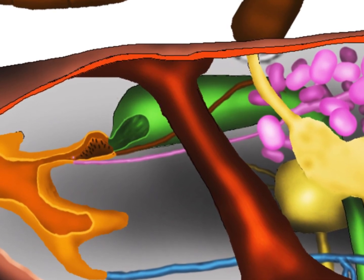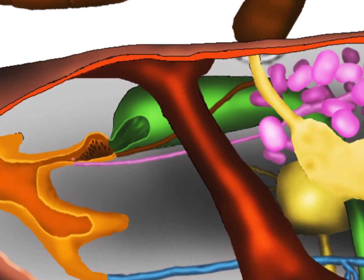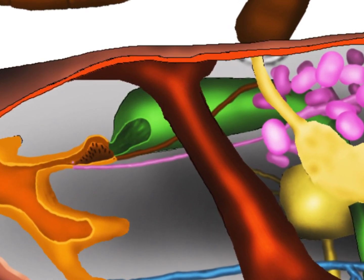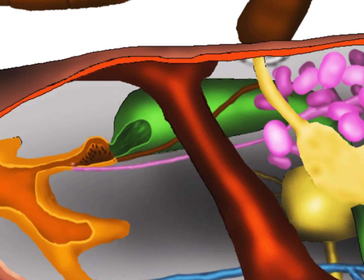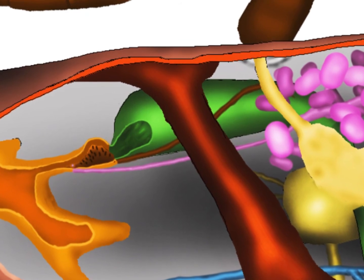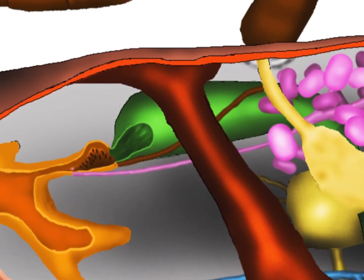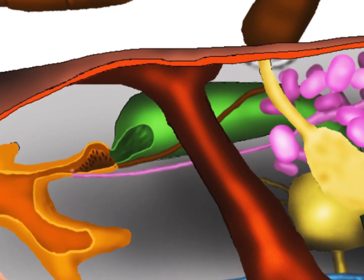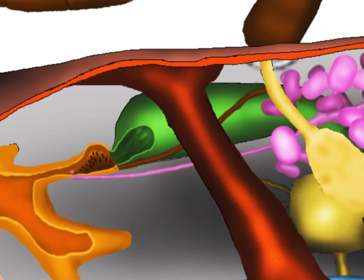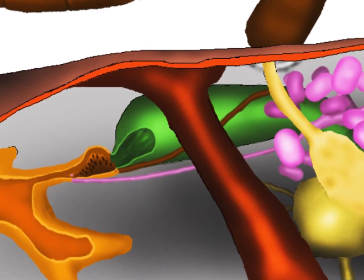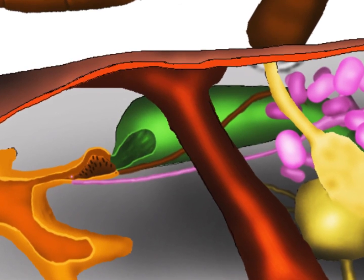The duct of the brood food gland — or hypopharyngeal gland as it is known — opens at the front of the hypopharyngeal plate. There are two of these openings, one on each side.